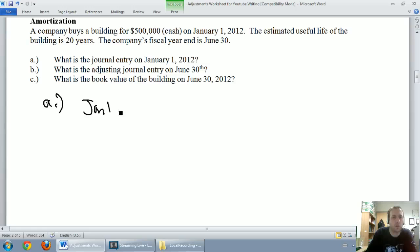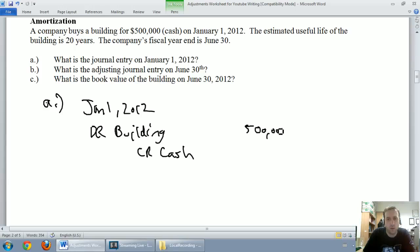January 1st, 2012, we bought a building for cash. Building's an asset, it's going up. We have more assets today than we had yesterday. Debit building. Cash is an asset that's going down. To make an asset go down, you credit it. We're going to debit building for $500,000 and credit cash for the same. We've done our basic journal entry. On to the second part, the adjustment part.